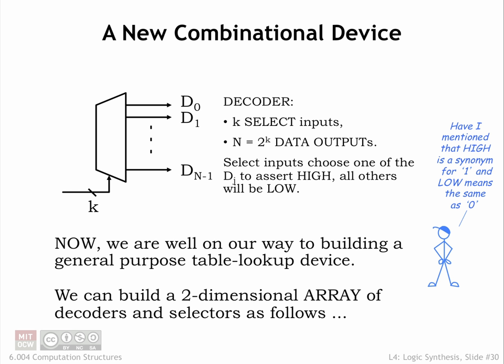Where MUXs are good for implementing truth tables with one output column, read-only memories are good for implementing truth tables with many output columns.